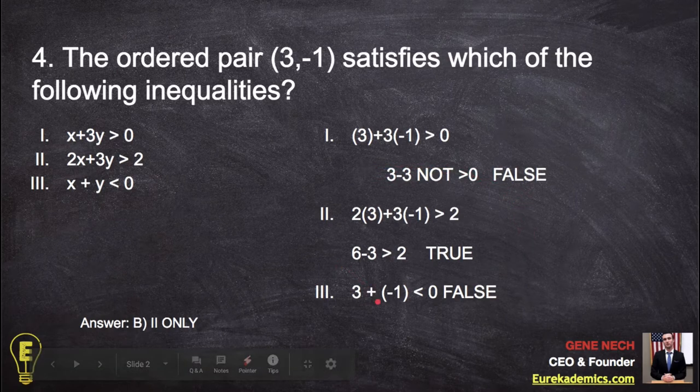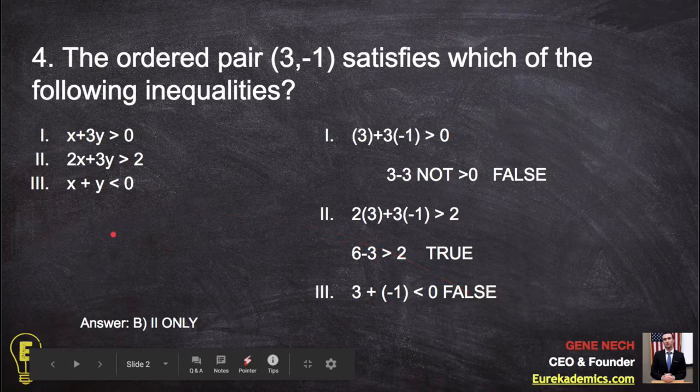Three minus one is two, and two is not bigger than zero, false. So answer is B, number two only. That's the only one where this is true.